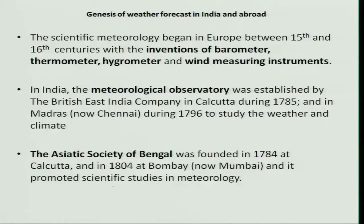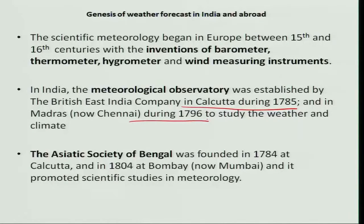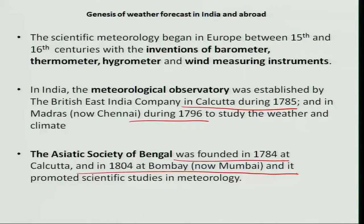Similarly, in India the meteorological observatory was established by the British East India Company in Kolkata during 1785, and in Madras — now called Chennai — during 1796, to study weather and climate. These are among the oldest observatories in the world. The Asiatic Society of Bengal was initially founded at Kolkata in 1784 by Sir John Williams, and the Asiatic Society was also established at Bombay in 1804 to promote scientific studies related to meteorology.